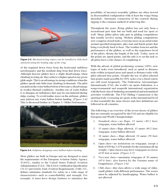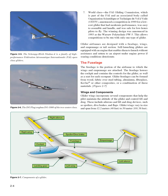6. Club class: this class allows a wide range of older, small gliders with different performance. The scores must be adjusted by handicapping. Water ballast is not allowed. 7. World class: the FAI Gliding Commission, which is part of the FAI in an associated body called Organisation Scientifique et Technique du Vol à Voile (OSTIV), announced a competition in 1989 for a low-cost glider that had moderate performance, was easy to assemble and handle, and was safe for low-hours pilots to fly. The winning design was announced in 1993 as the Warsaw Polytechnic PW5. This allows competitions to be run with only one type of glider.